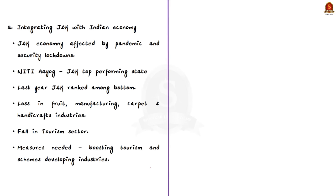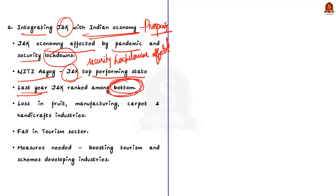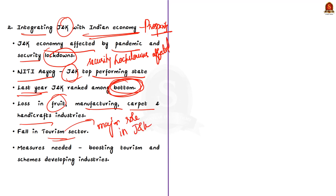The second goal was integrating the region with the Indian economy and attaining prosperity. Like any other region, the pandemic and lockdowns affected Jammu and Kashmir, further worsened by the security lockdowns imposed when Article 370 was abrogated. NITI Aayog noted that J&K was a top-performing state but was ranked among the bottom last year. Many industries are facing losses, such as the fruit industry, manufacturing, carpet, and handicraft industries. Tourism played a major role in its economy but has been affected by pandemic and security concerns. Overall, the economy of Jammu and Kashmir did not prosper — tourism needs to recover and schemes to develop loss-making industries are urgently needed.